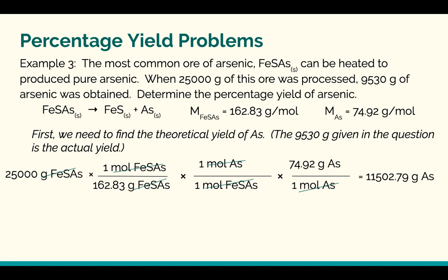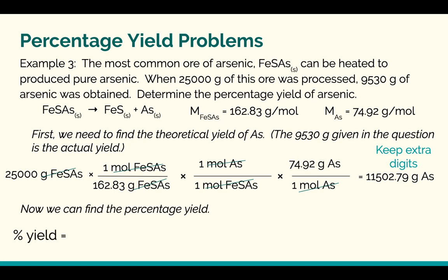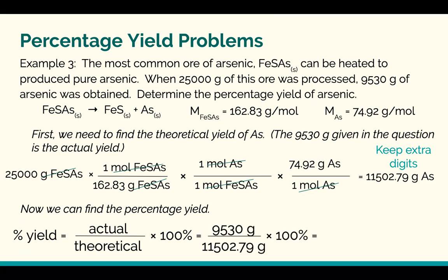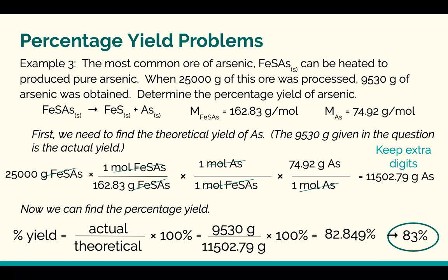Now that we have the theoretical yield, we can calculate the percent yield, remembering to keep a couple extra digits. Percent yield is actual over theoretical times 100%: 9,530 grams divided by 11,502.79 grams times 100% gives 82.849%. But looking back at the calculation, the number 25,000 only had two significant figures, so our final answer is a percentage yield of arsenic of 83%. That's how you calculate the percentage yield — it's really just one new step from what we've been doing before, just that extra calculation of the percentage yield.